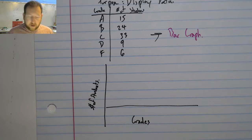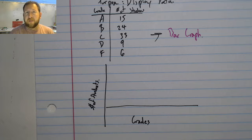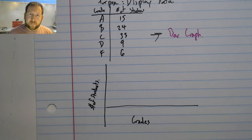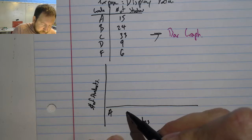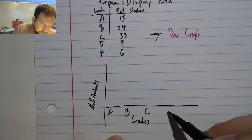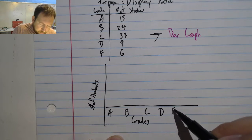Normally when I make a bar graph I'm going to want to do it on graph paper. I'm going to be really accurate. But this is just kind of a rough one that I'm going to use. So I'm going to put my A's, my B's, my C's, my D's, and my F's.